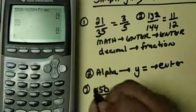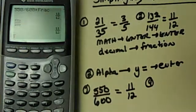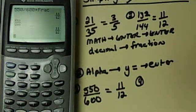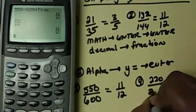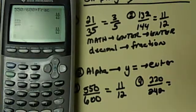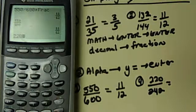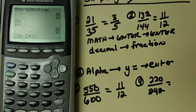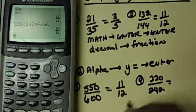Okay. So, let's practice one more. Number four. So, the last one we're going to do is 220 over 242. And I'm going to do it both ways, so you can see it, 220 over 242. Then I can hit math, enter, enter, and I get 10 over 11.